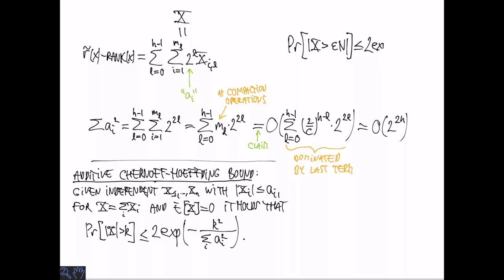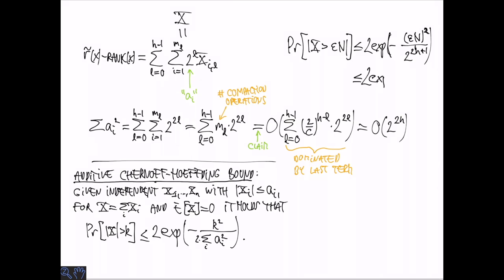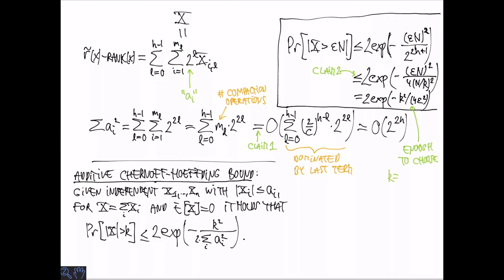Now let's denote the error by X. Probability that X is more than epsilon times N. We can upper bound that as being exponentially small in the deviation epsilon N squared divided by the sum of AI squared, which is 2 to the 2H plus 1. And now I'm going to claim, so this is the second claim that we need to substantiate, that 2 to the 2H plus 1 can be upper bounded by 4 times N over K squared. So if you believe that for a minute, the whole thing is going to be exponentially small in K squared divided by 4 epsilon squared. So we'll get back to this claim number 2 on the next slide. But before that, let's see that we achieve what we wanted to. So if you look at this, it's enough to choose K such that this fraction becomes larger than log 1 over delta. And to do that, we just need to choose it to be 2 times square root of log 1 over delta divided by epsilon. That gives us error probability delta.